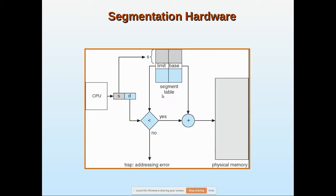This is how the segment table is stored. When a particular line is executed — say, for example, the fifth line and the segment is zero — the segment number will be zero and the fifth line offset 'd'. In segment zero, fifth line, the CPU will generate this address, then search in the segment table. For segment zero, it will go and search its base address.